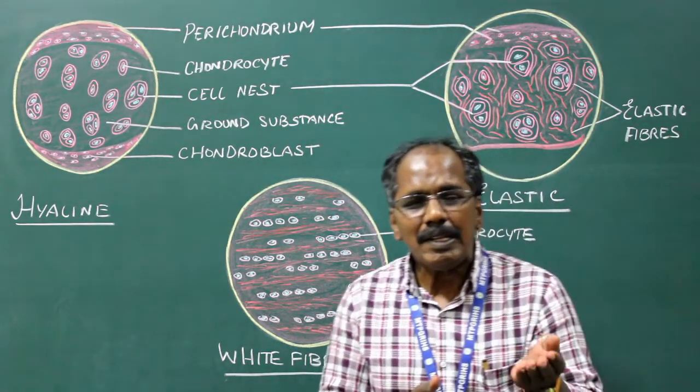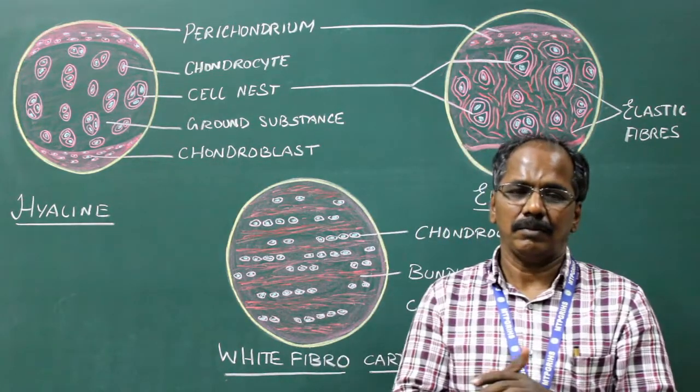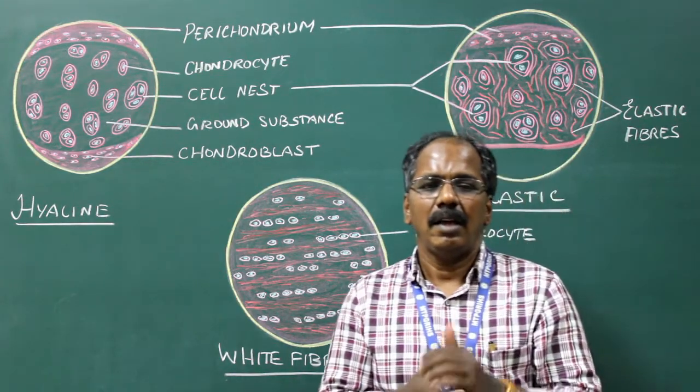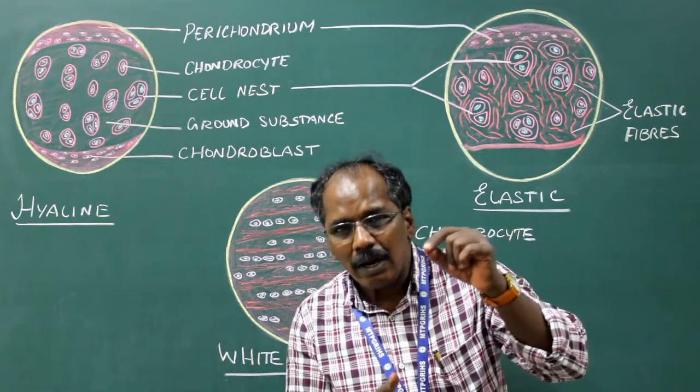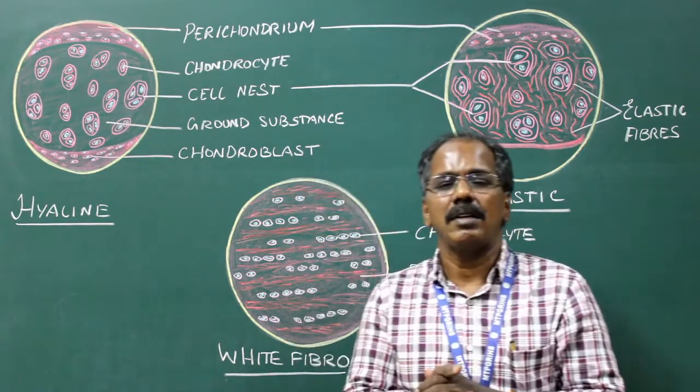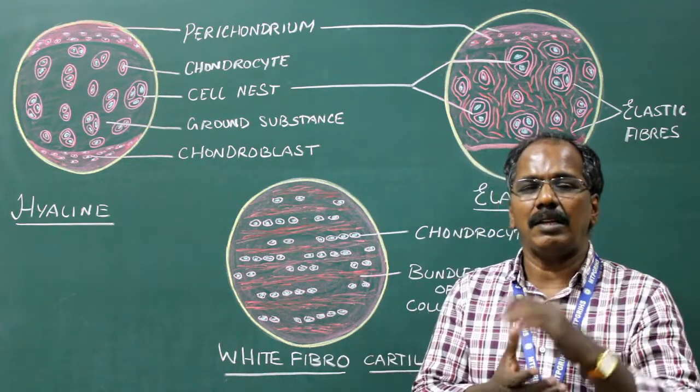With increasing age, it tends to become calcified. It is avascular and alymphatic. Immigration of cartilage by blood vessels results in calcification and death of cartilage.